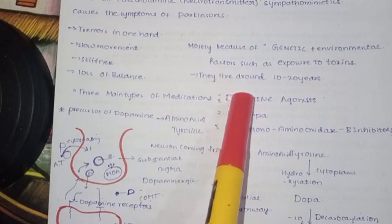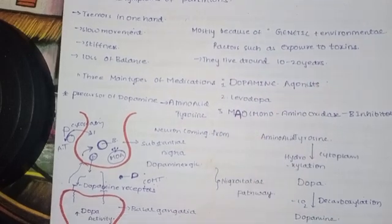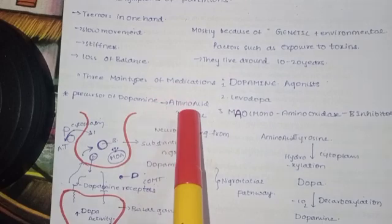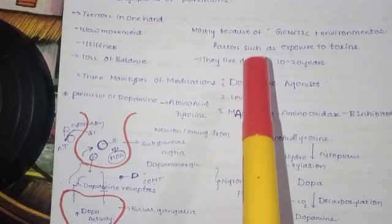This disease generally has a lifespan of around 10 to 20 years. There are three main types of medications. Dopamine levels need to be increased.